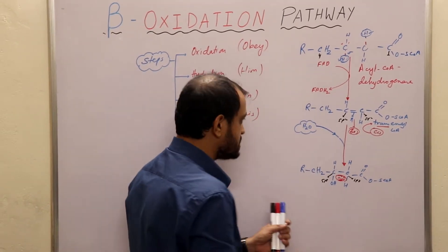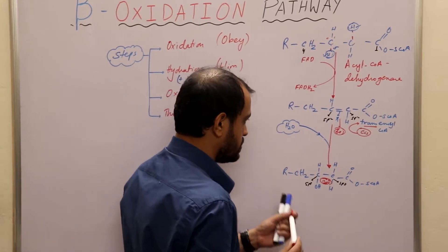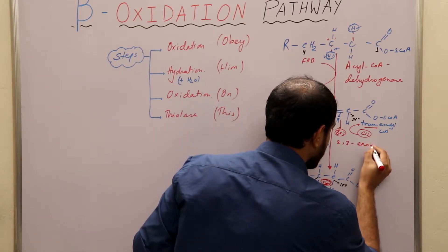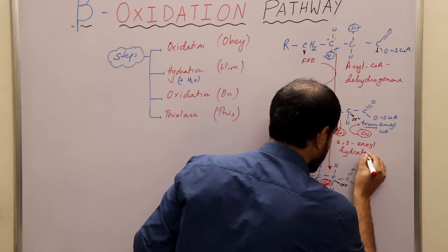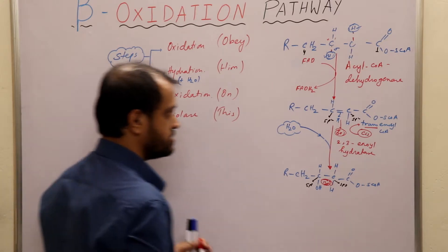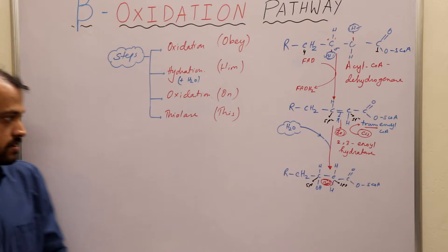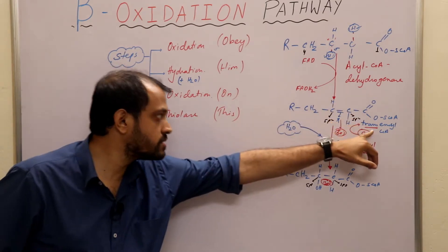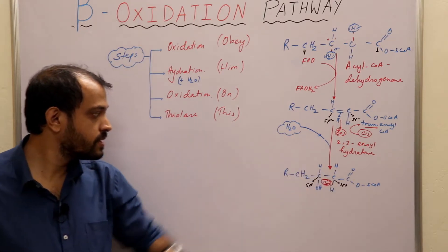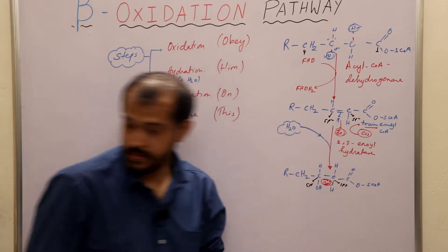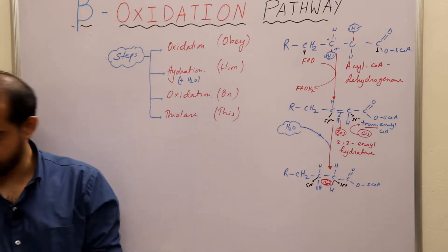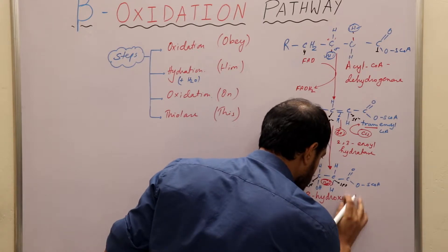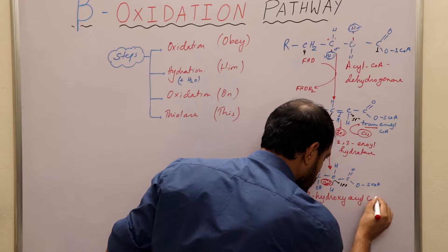What is the enzyme acting here? The name of this enzyme is 2,3-enoyl hydratase. We have successfully converted trans-2-enoyl-CoA to 3-hydroxyacyl-CoA.